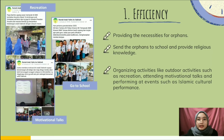First, let us look at the efficiency of the organization. Roma Anak Yatin Asakina is very efficient in managing the organization, as they provide all necessities for orphans like sending them to school and providing religious knowledge. They also efficiently organize additional activities such as outdoor recreation and attending motivational talks.